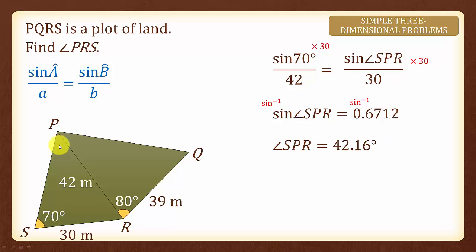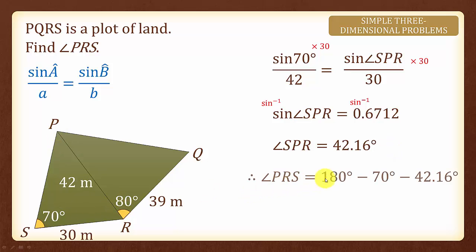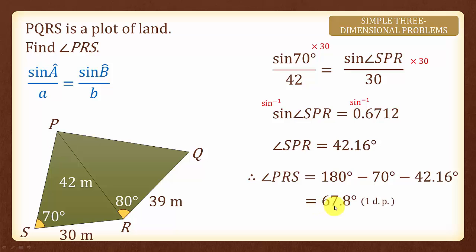Finally, to find angle PRS, we will use 180 degrees minus 70 degrees minus 42.16 degrees. Hence, we will have 67.8 degrees, rounded off to 1 decimal place.